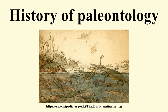In 1667, Nicholas Steno wrote a paper about a shark head he had dissected. He compared the teeth of the shark with the common fossil objects known as tongue stones and concluded that the fossils must have been shark teeth. Steno then took an interest in the question of fossils, and to address some of the objections to their organic origin he began studying rock strata. The result of this work was published in 1669 as Forerunner to a Dissertation on a Solid Naturally Enclosed in a Solid. Steno realized that certain kinds of rock had been formed by the successive deposition of horizontal layers of sediment and that fossils were the remains of living organisms that had become buried in that sediment.